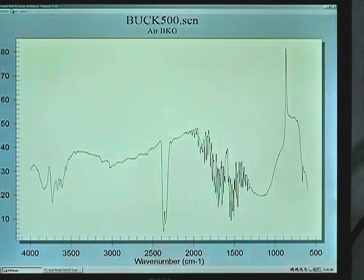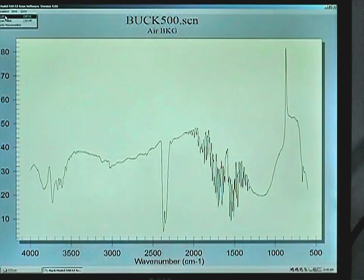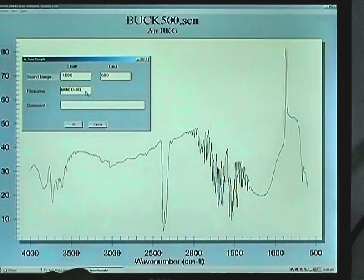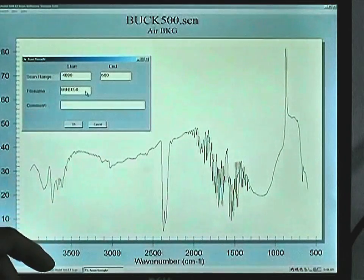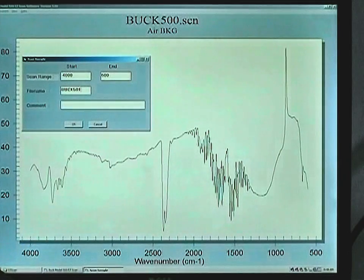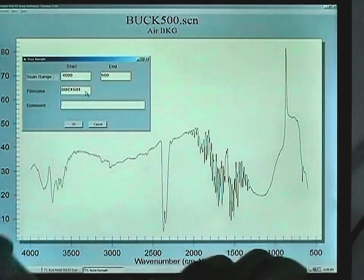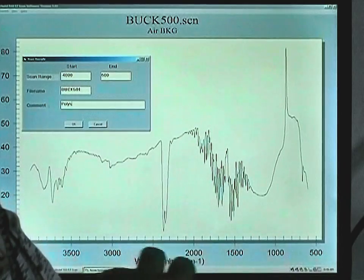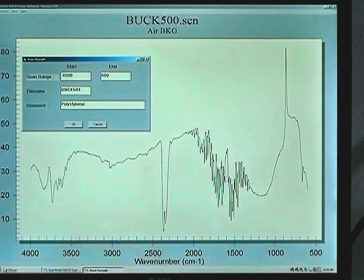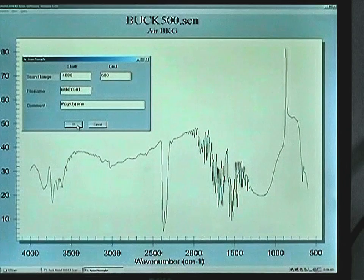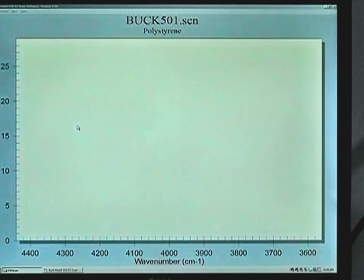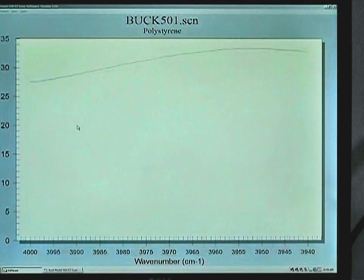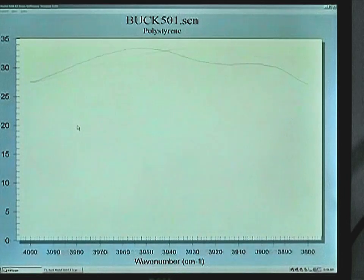Click on Instrument, Scan, and when the sample ID window comes up, change the file name to Buck 501 or another appropriate file name and put a comment in to identify the sample. Click OK. The system will reset itself and you will see the single beam spectrum of the polystyrene card being run.